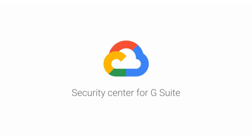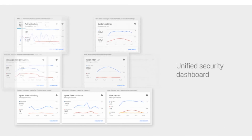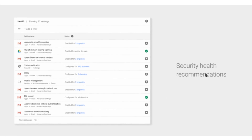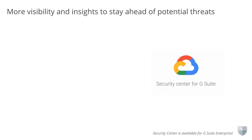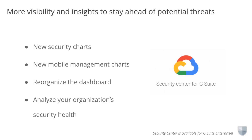The Security Center is a tool that brings together security analytics, actionable insights, and best practice recommendations from Google to help you protect your organization, data, and users. You can now find some new additions to the Security Center, including new security charts that show OAuth activity and business email compromised scam threats, new mobile management charts to help you examine activity like when devices have been hijacked, rooted, or jailbroken, ways to reorganize the dashboard, and ways to analyze your organization's security health.